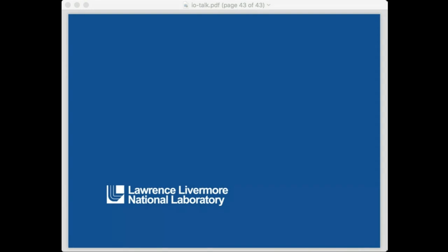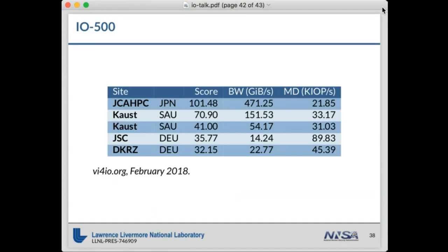Thanks, Elsa, that was excellent. A question came in early: what is a co-situ process? Co-situ processes are similar to in-situ processes - you might have a single job allocation with two separate MPI applications running within it. One MPI group or application is doing analysis while another is generating data. Similar to in-situ or in-transit analysis, co-situ is two applications that are somewhat decoupled but have a data dependency between them.